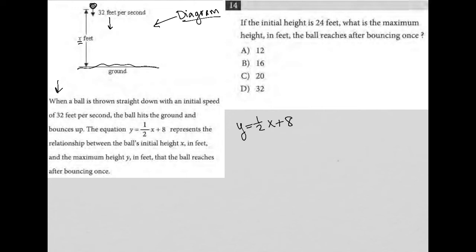So, X is the initial height, and Y is the height after it bounces, the maximum height after it bounces back up. So, the question here for number 14 says if the initial height is 24 feet, so that means if X equals 24, what is the maximum height in feet the ball reaches after bouncing once?